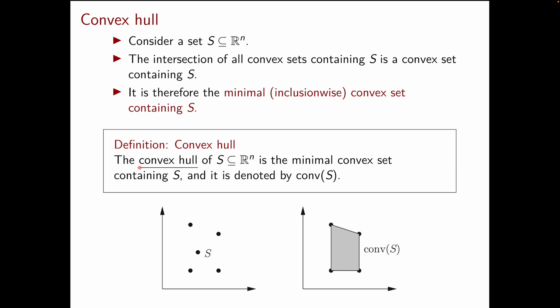Next we can define the convex hull of a set S. The convex hull of S is defined as the minimal convex set containing S, and we denote the convex hull of S by conv S. When we say minimal in this definition, this means minimal inclusion-wise. A nice constructive way to look at this definition is the following: pick all the convex sets containing S and intersect them all. The intersection of convex sets is also convex, so this intersection is a convex set containing S. Furthermore, by construction, it is the minimal inclusion-wise convex set containing S.